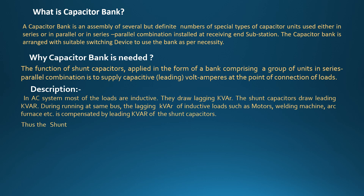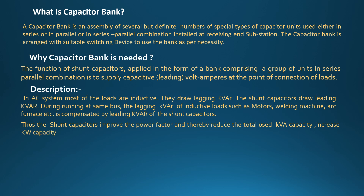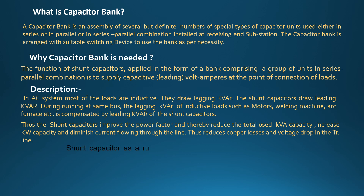Shunt capacitors improve the power factor and thereby reduce the total used KVA capacity, increase KW capacity, and diminish current flowing through the line, thus reducing copper losses and voltage drop in the transmission line. Shunt capacitors are as a rule connected near the load end and also at the receiving substation.